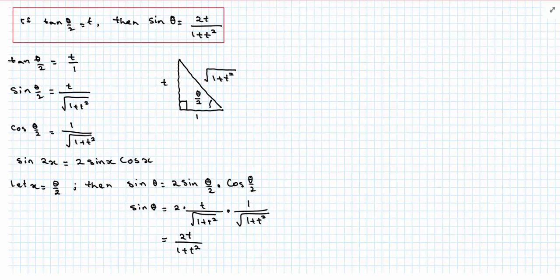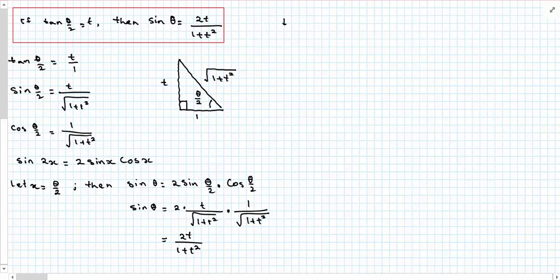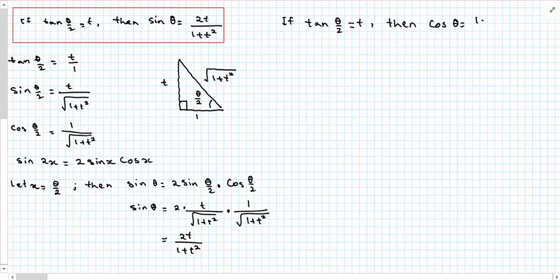Our last relationship in the t method is for cos. If tan(θ/2) is equal to t, then cos θ is going to be 1 minus t squared over 1 plus t squared.